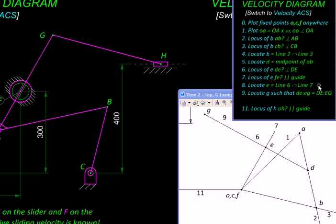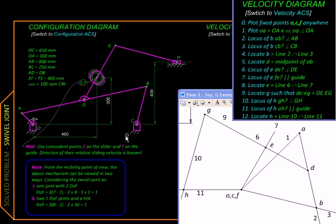One relative to the fixed guide, which would be horizontal, and one relative to point g, which will be perpendicular to gh. They intersect over here and that is where the point h will be located. So we have all the velocities because all the points in the configuration diagram are now mapped to their respective images in the velocity diagram.